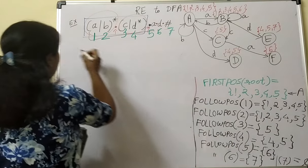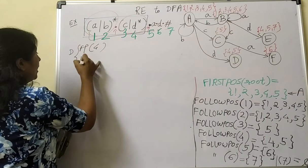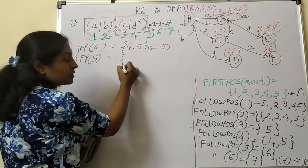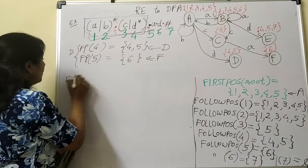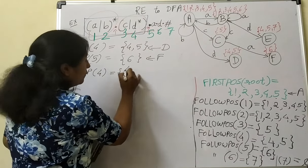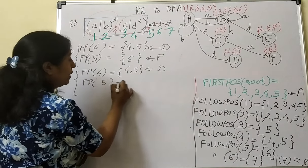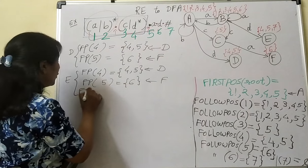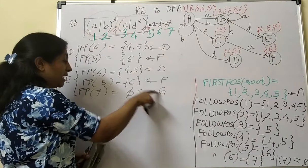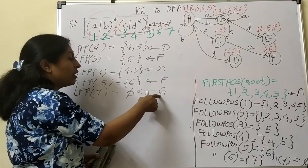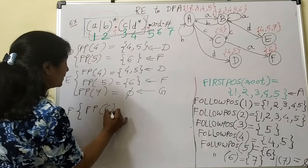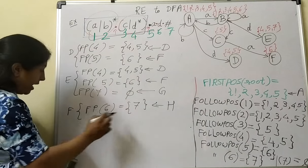In state D, symbols are 4 and 5. Follow(4) = {4, 5} = state D itself; follow(5) = {6} = state F. From state E, symbols are 4, 5, and 7. Follow(4) = {4, 5} = state D. Follow(5) = {6} = state F. Follow(7) gives a new state G, which is the accepting state — the state obtained on follow position of hash. Then for state F, symbol 6: follow(6) = {7}, giving new state H.